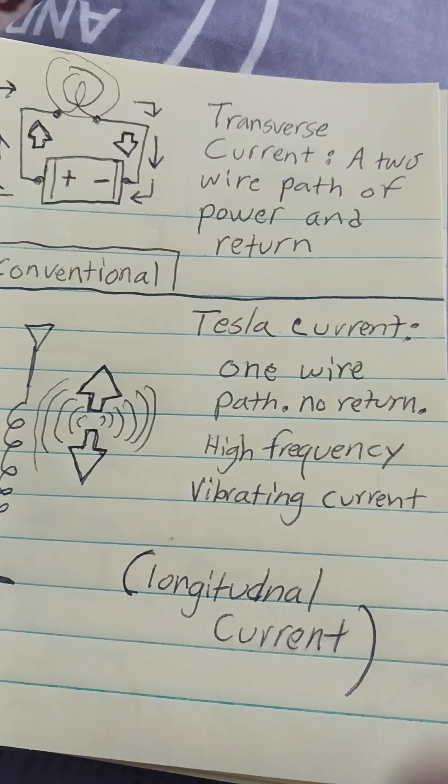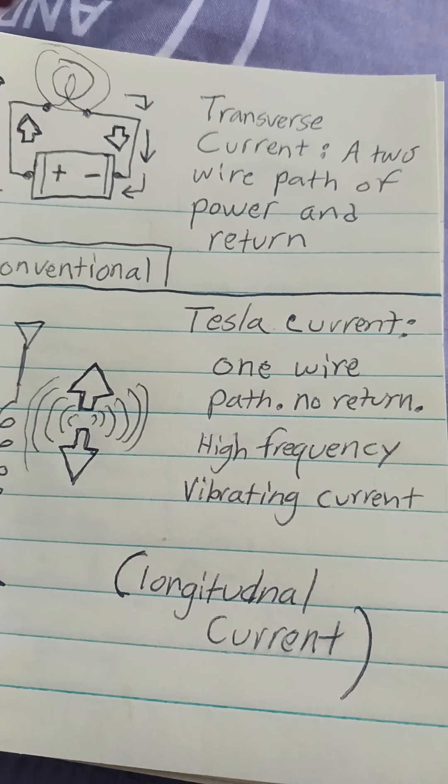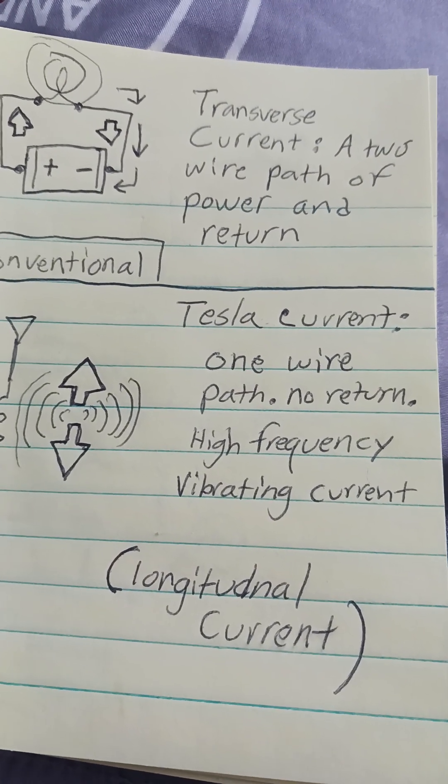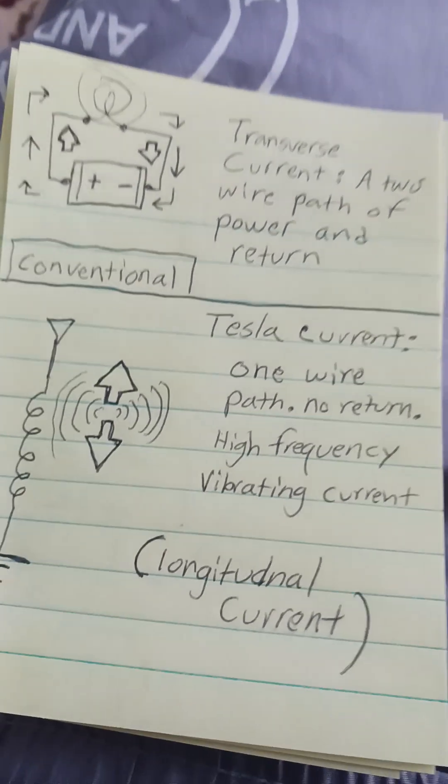The Tesla currents have one wire, no return. They use high-frequency vibrating current, longitudinal current, instead of transverse.